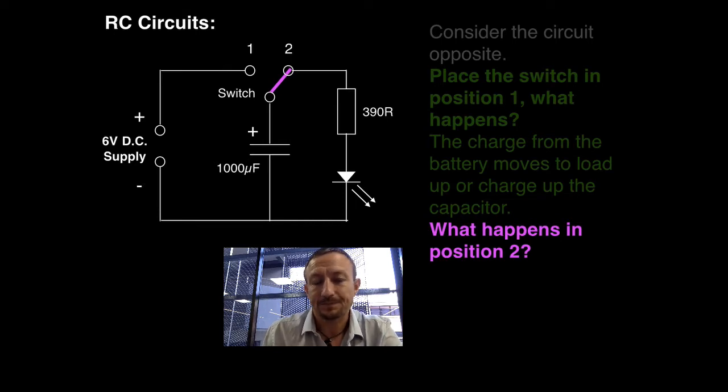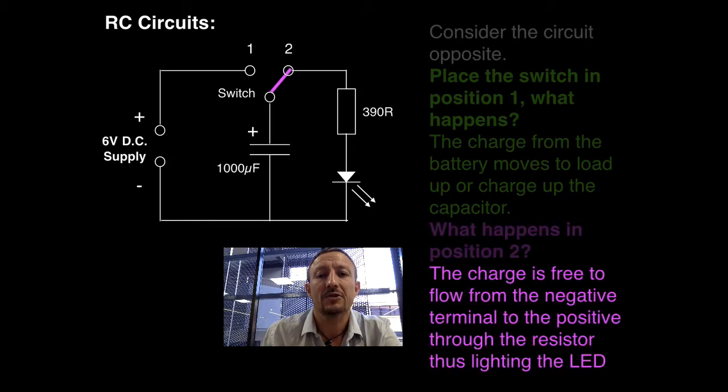So I hope you've worked out that what's going to happen is that the charge from the capacitor is basically going to flow through the bottom loop of the circuit. As it flows through the bottom loop of the circuit, the result is it will flow slowly through the resistor, and as it flows slowly through the resistor, it will then flow into the LED, causing the LED to light up.